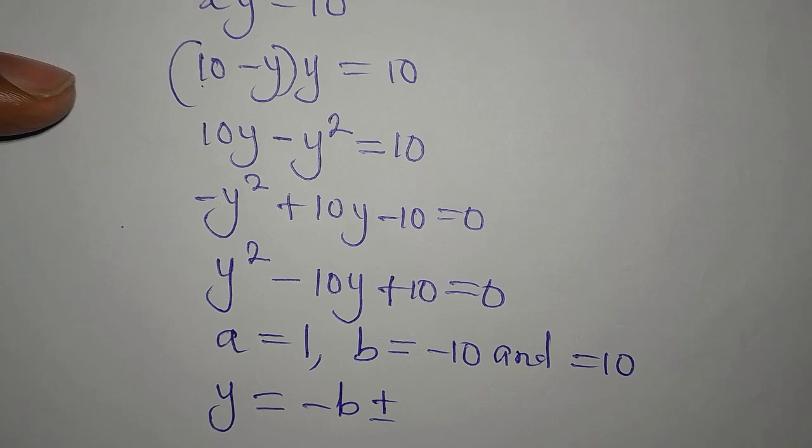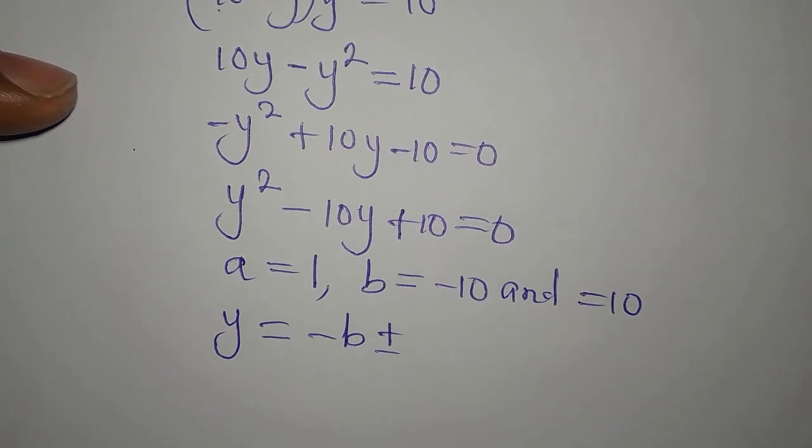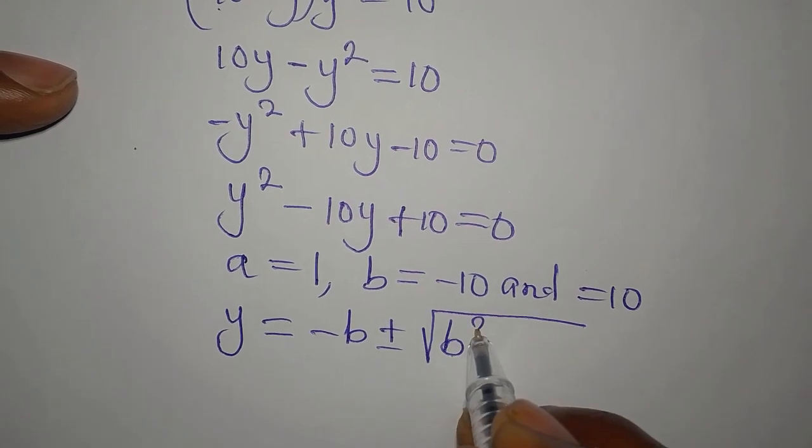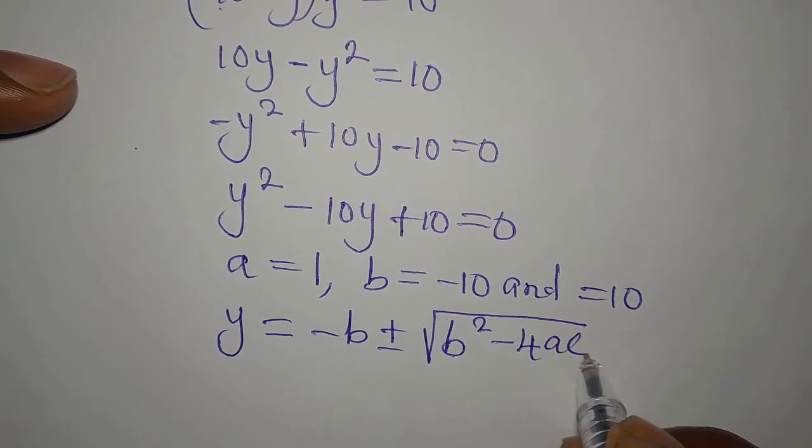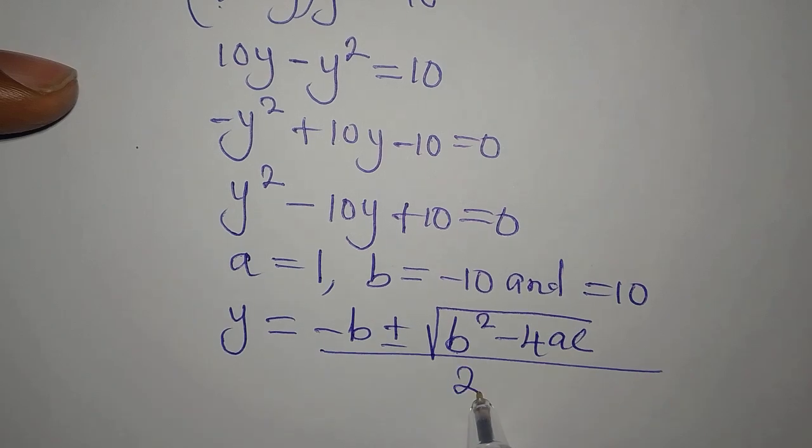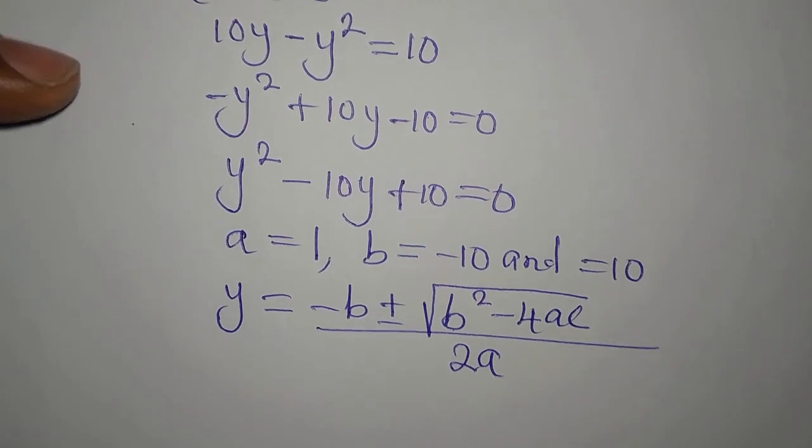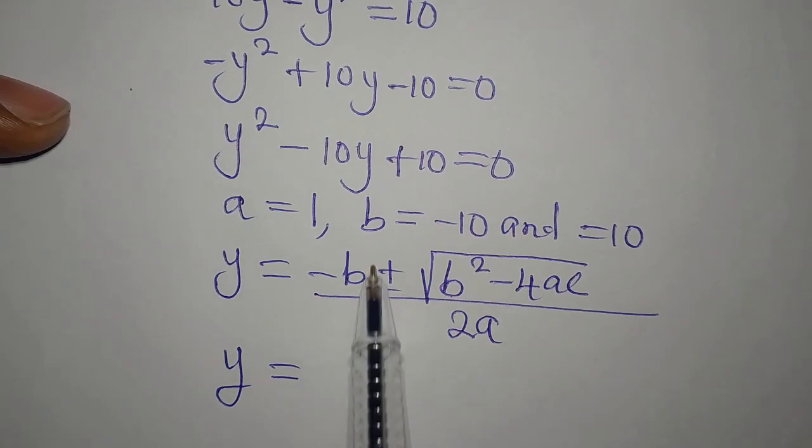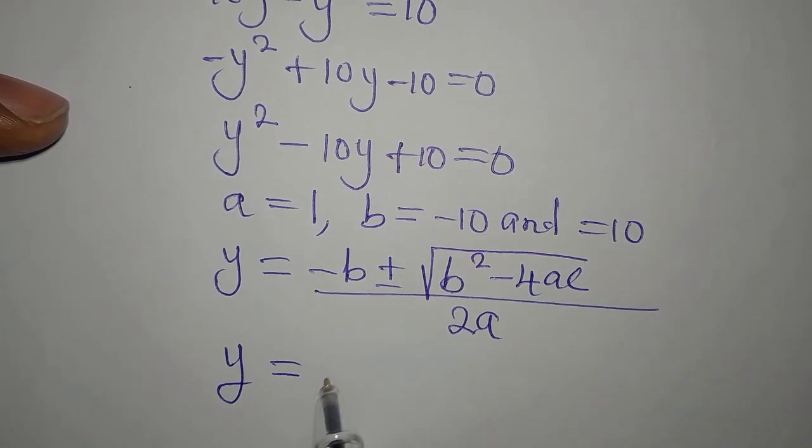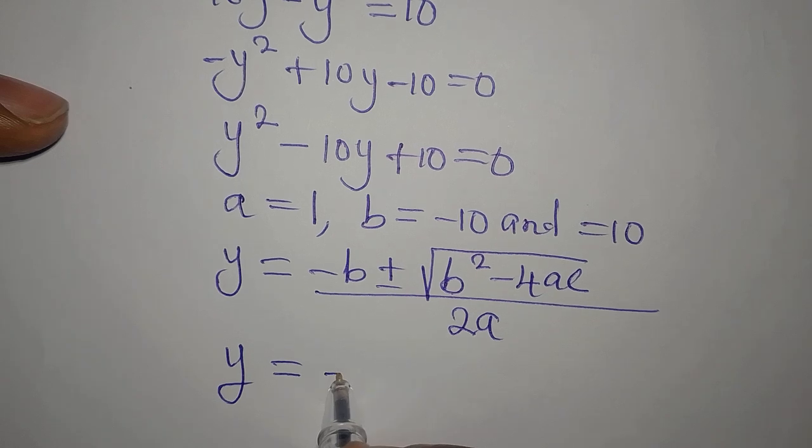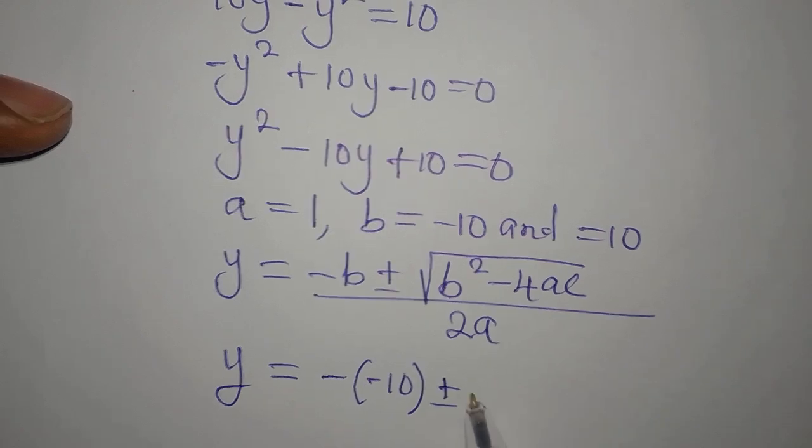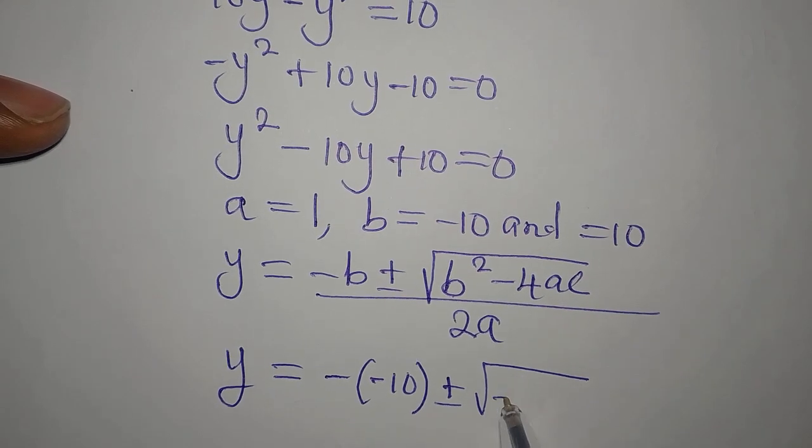Y equals minus b plus or minus square root of b squared minus 4ac, divided by 2 times a. Minus b, so y equals minus b. So y now is minus b, this minus b becomes minus minus 10.